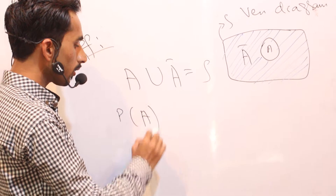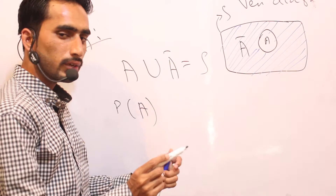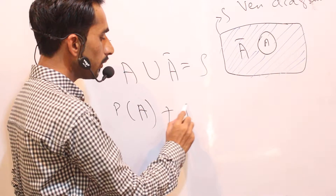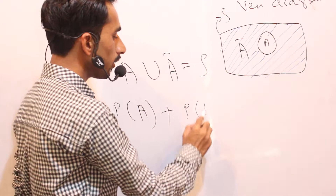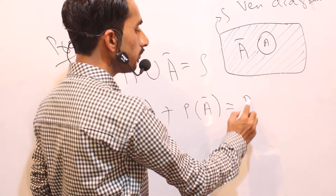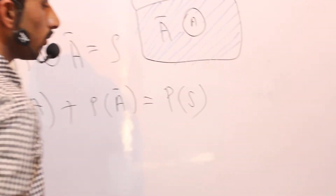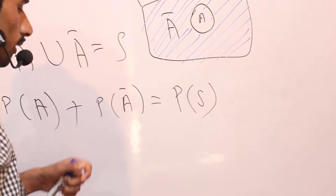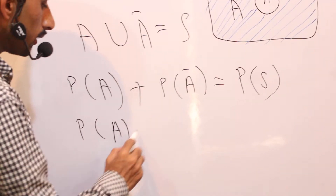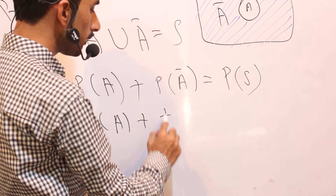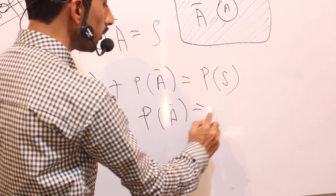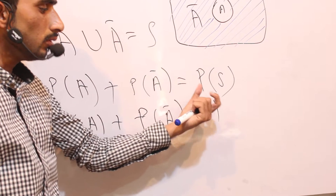Probability of A union A-bar will be converted into probability of A plus probability of A-bar, which is equal to probability of S.